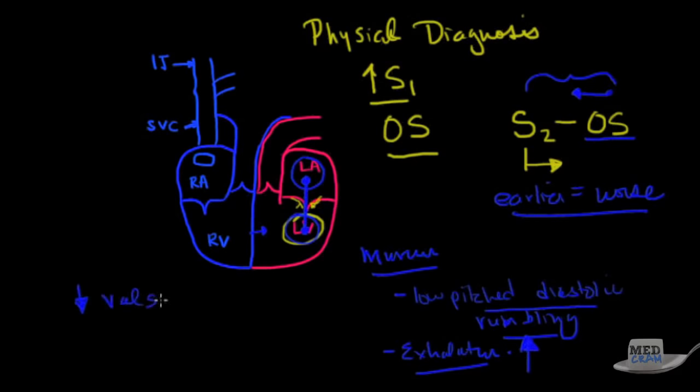Things that will make the sound smaller would be a valsalva. Because remember, a valsalva makes the heart small on both sides. This is the murmur.